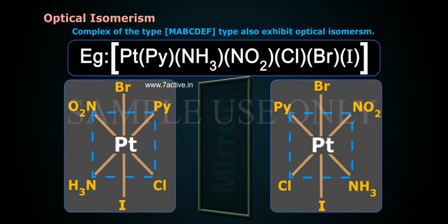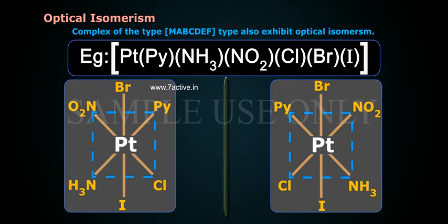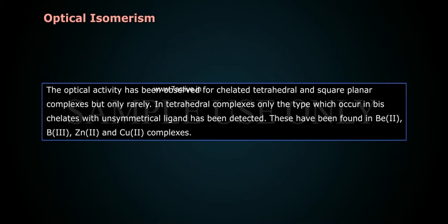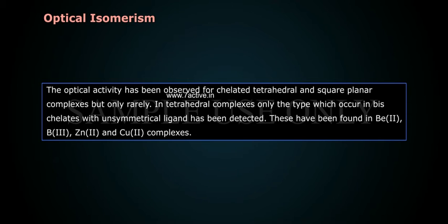Complexes of the type MABC-DAEF also exhibit optical isomerism. The optical activity has been observed for chelated tetrahedral and square planar complexes, but only rarely. In tetrahedral complexes, only the type occurring in bis chelate with an unsymmetrical ligand has been detected.